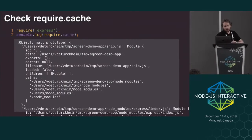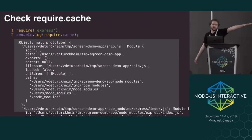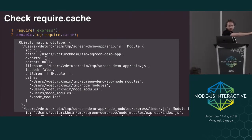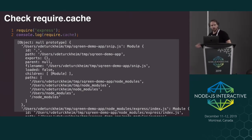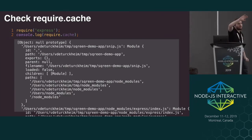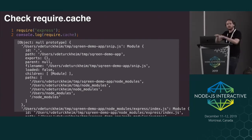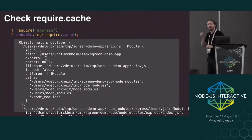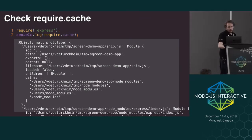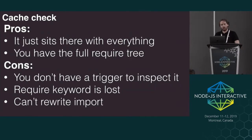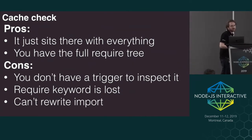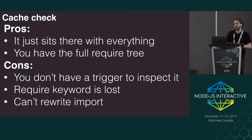The cache is pretty straightforward to access. You just type require.cache and you will see a massive object that has knowledge about the modules that are loaded and which module required them. So you have the whole dependency tree — not the NPM tree, but really why the module has been imported in Node.js, who imported it and how. You just type require.cache and you have access to the full require tree.